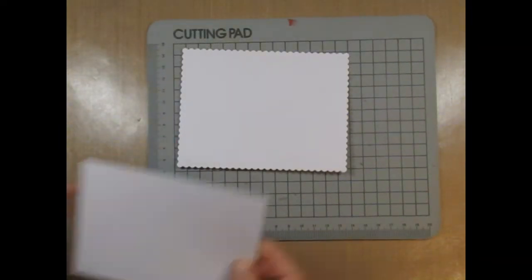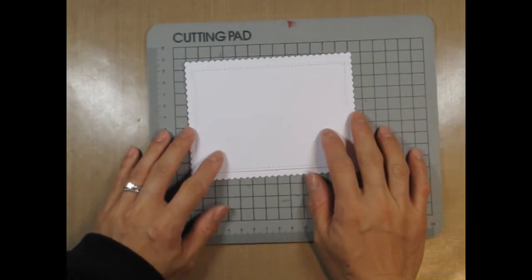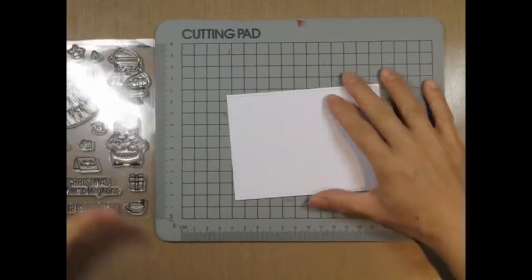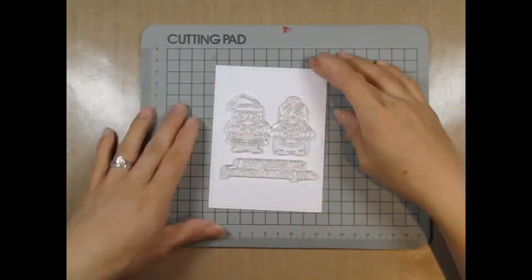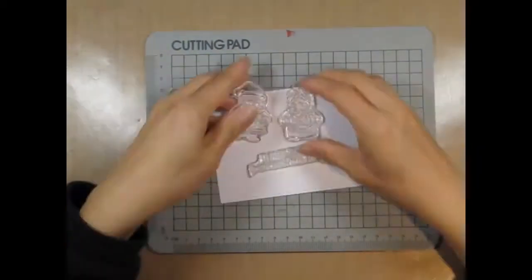Now I'm going to take the three main elements and decide on the orientation of the card. I go back and forth a couple of times between the horizontal and vertical layout, but I decide that the vertical one is better.